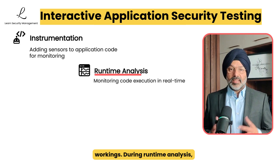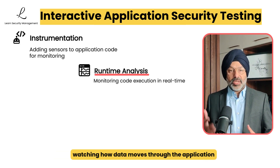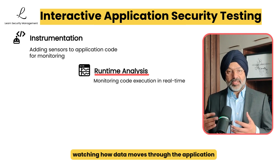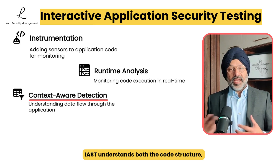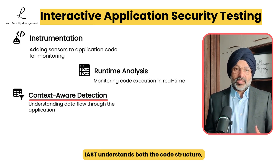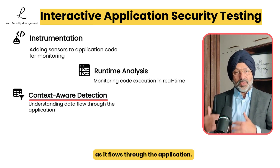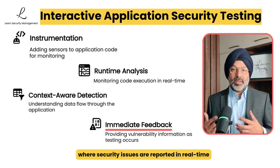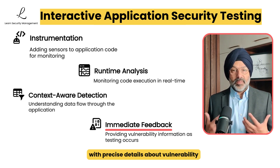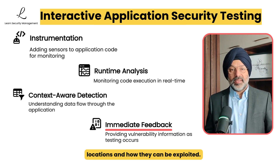During runtime analysis, these sensors continuously monitor code execution pathways, watching how data moves through the application while normal testing activities occur. With context-aware detection, IAST understands both the code structure and runtime behavior simultaneously, seeing exactly how data transforms as it flows through the application. This enables immediate feedback, where security issues are reported in real-time with precise details about vulnerability locations and how they can be exploited.